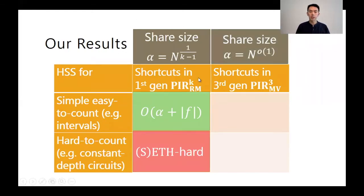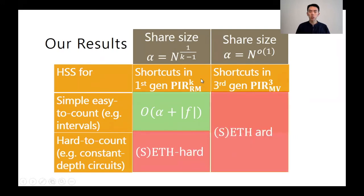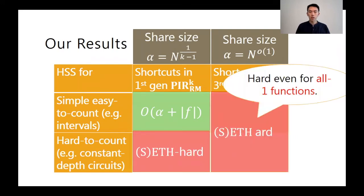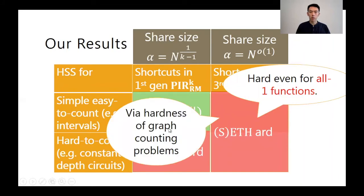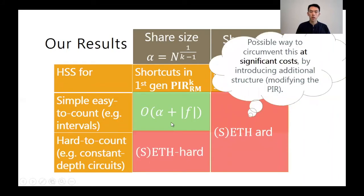The scenarios are perhaps surprisingly very different when we consider matching vector protocols. We can show that even for the all-ones function, this computation cannot be sped up to sub-exponential time unless the ETH fails. Therefore, the hardness arises from the structure of the matching vector protocol — specifically from the structure of the combinatorial object, the matching vector family — and not from the function being evaluated. This builds on the hardness of graph counting problems. Finally, we present possible ways to circumvent the hardness of matching vector protocols; however, these circumventions do not actually give shortcuts because we are rebuilding the protocols, which comes at significant costs such as increasing the number of servers.